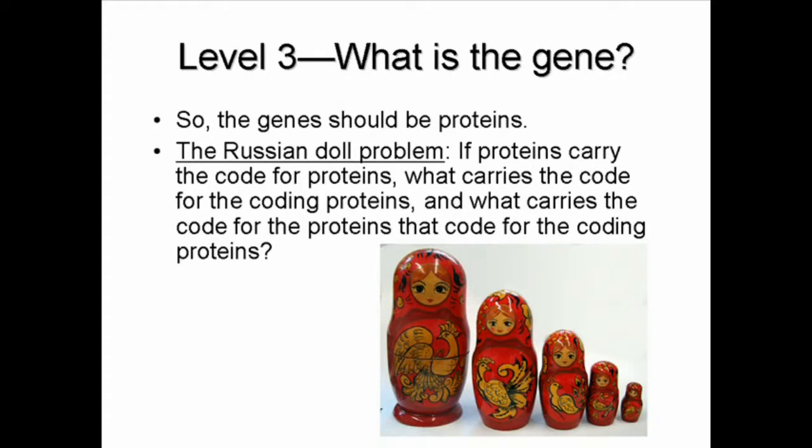Originally, people thought that genes should be proteins since they were far more complex than DNA. However, that created what was called the Russian Doll Problem. Basically, what codes for the protein to make the protein, what codes for the protein that codes for the protein to make the protein? In other words, if protein is the code and it is also the product, what is the original material that one cannot live without? That was called the Russian Doll Problem.